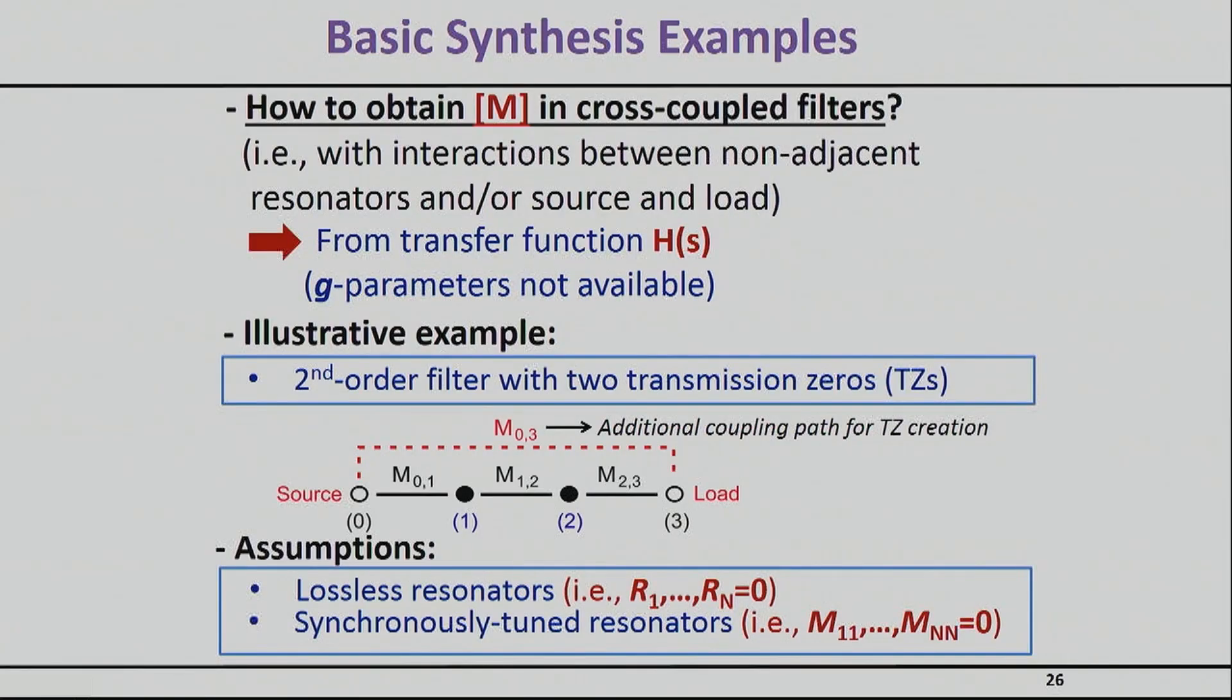Now our next step will be to give you an example that actually has cross couplings, because once you go in that domain you're losing the G parameters. Now we only have the transfer function to work with.